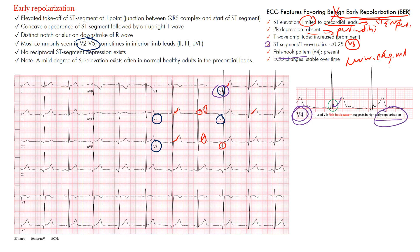Unlike STEMI, which has dynamic EKG changes over a short period, or pericarditis with dynamic changes over a longer period, early repolarization shows stable EKG changes. These patients tend to show the same pattern consistently over a year or more.